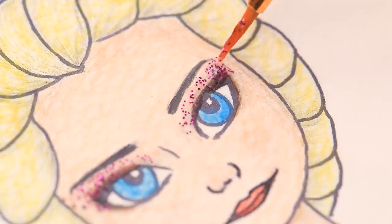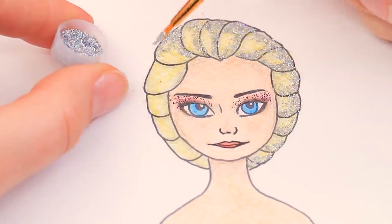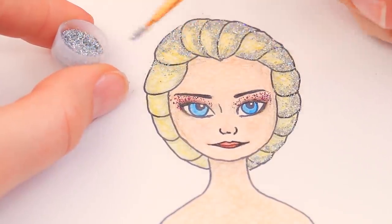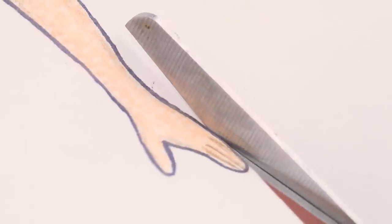Decorate the eyelids with glitter glue and add silver sparkly glitter to the hair. Now take scissors and cut the doll out.